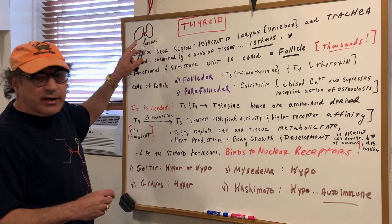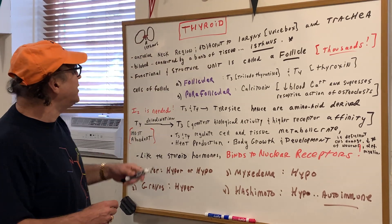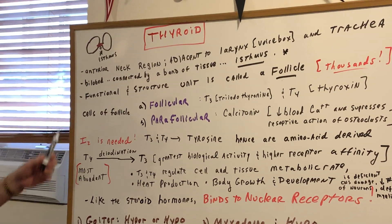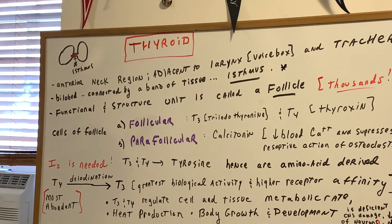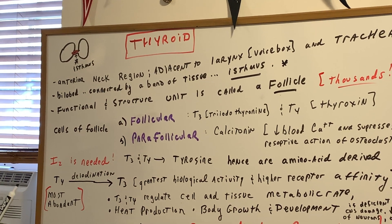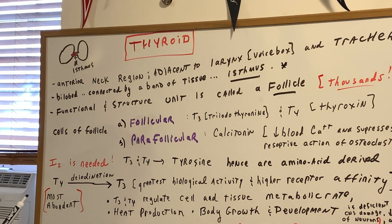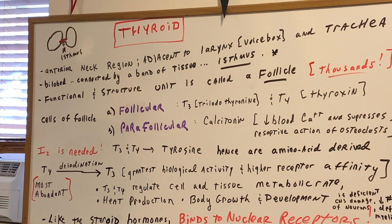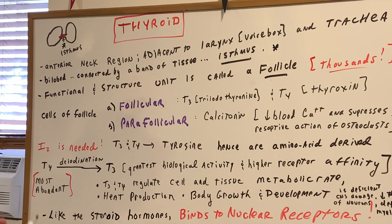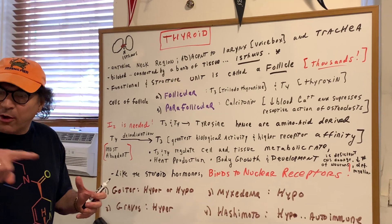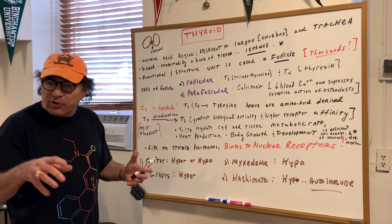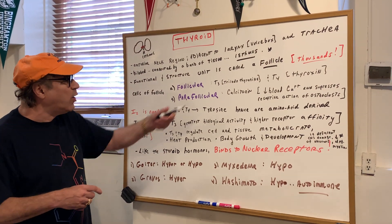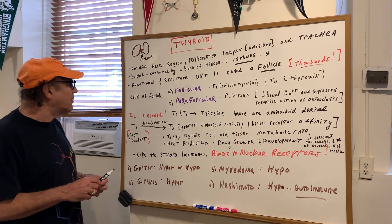The thyroid gland is bilobed, connected by a band of tissue called an isthmus. The functional and structural unit of this gland is called the follicle. In pathology class, you'll see thousands of these round, circular objects filled with colloid — that's the follicle.